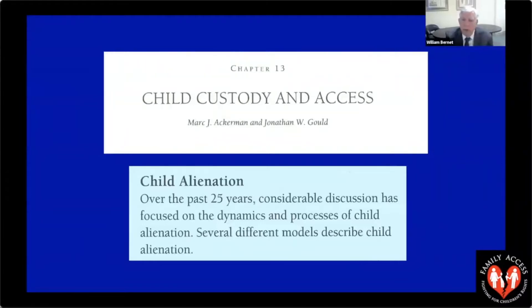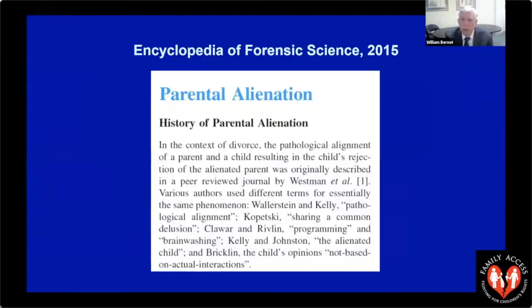The Encyclopedia of Forensic Science, published by Wiley, includes a chapter called 'Parental Alienation.' Its opening paragraph reads: 'In the context of divorce, the pathological alignment of a parent and a child resulting in the child's rejection of that parent, the alienated parent.' It references researchers including Westman, Wallerstein and Kelly, Kopetsky, Clawar, and Rivlin.